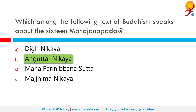It is also translated as 'gradual collection' or 'numerical discourses.' It is a Buddhist scripture — the fourth of the five Nikayas or collections in the Sutta Pitaka, which is one of the three baskets that comprise the Pali Tipitaka of Theravada Buddhism. This Nikaya consists of several thousand discourses ascribed to the Buddha and his chief disciples, arranged in 11 Nipatas or books according to the number of Dhamma items referenced in them.